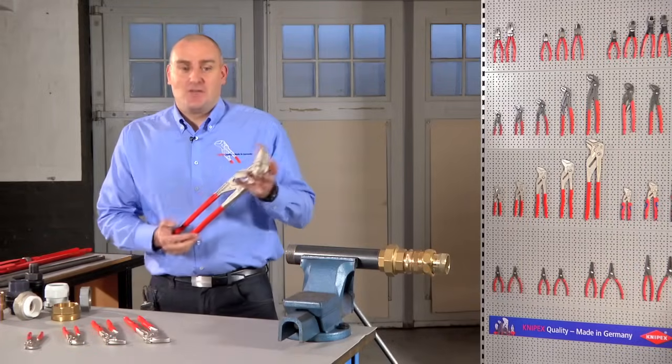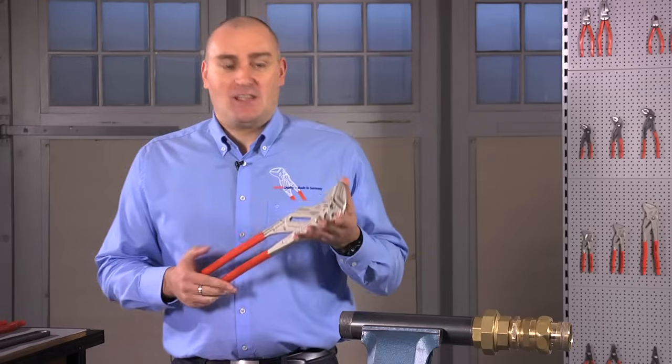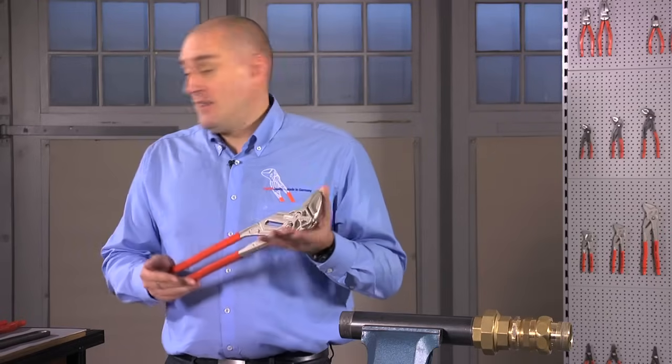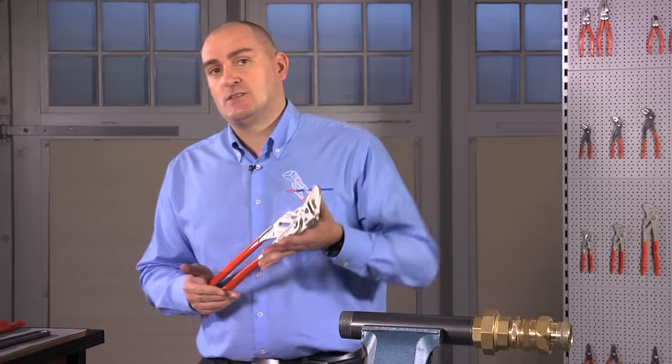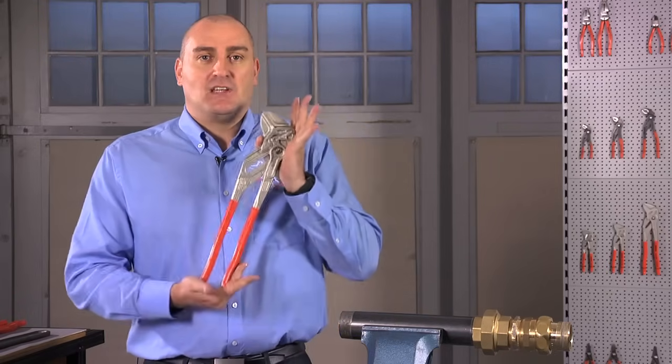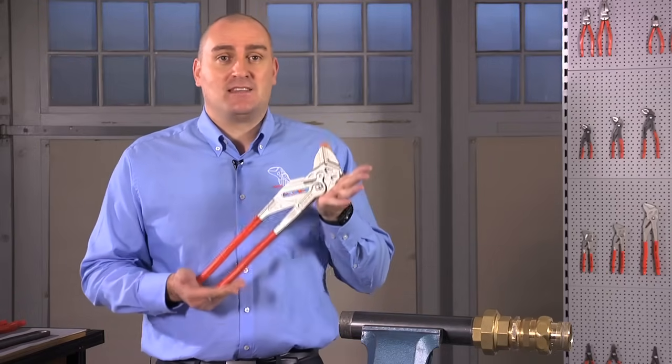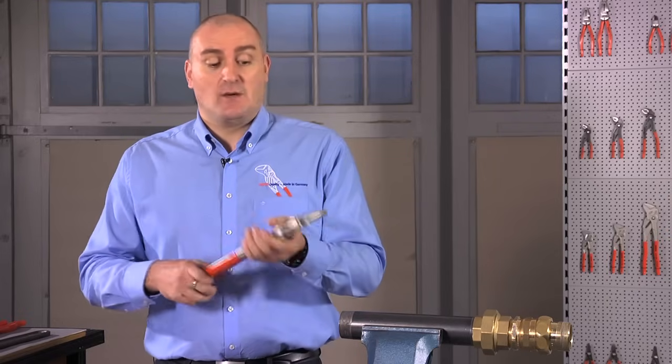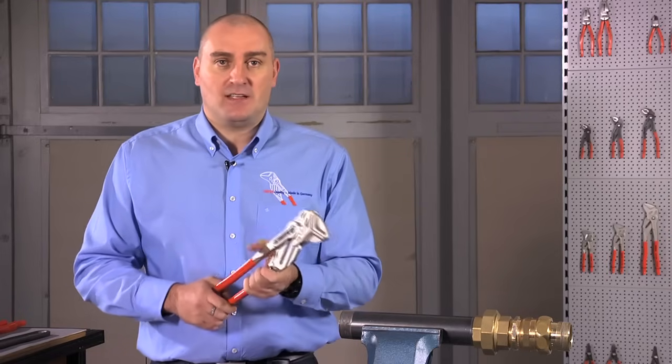So to summarize, the 400 millimeter pliers wrench is not only smaller than the alternative methods of using open spanners or heavy wrenches, it's much lighter and this actually only weighs less than one and a half kilos. So it's much easier to use and less tiring in its use.